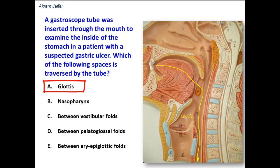The glottis is located in the upper part of the larynx, and the tube should not pass into the larynx. If it was a bronchoscope, then it passes into the larynx, but this is a gastroscope — it should reach the stomach — so it doesn't go into the glottis.